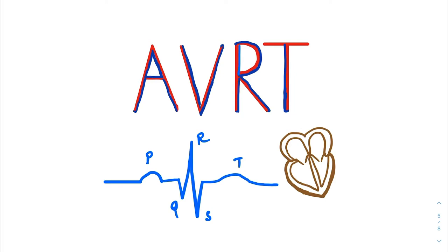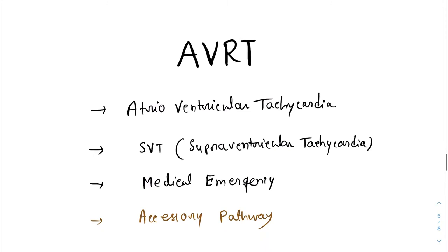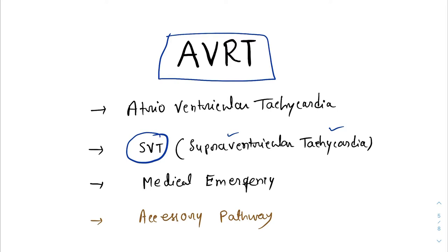AVRT stands for atrioventricular reentrant tachycardia. AVRT is one of the subtypes of SVT, that is supraventricular tachycardia. As the name suggests, supraventricular tachycardia means the origin of the tachycardia is above the level of the ventricle. SVT has one more important subtype, that is AVNRT — atrioventricular nodal reentrant tachycardia — which I have discussed in my previous class. Kindly refer to that.